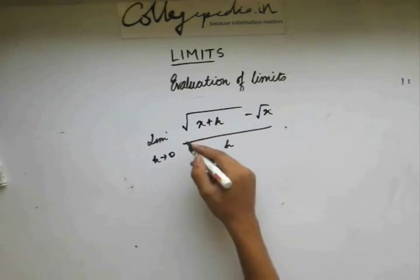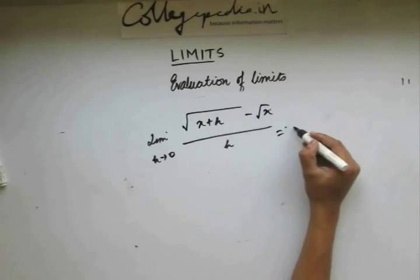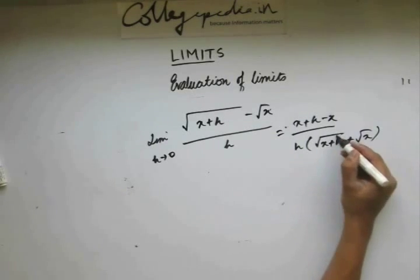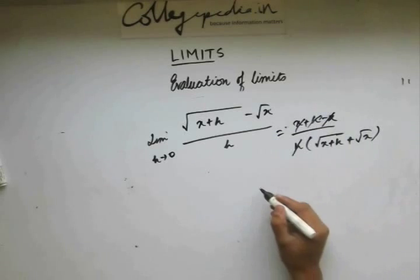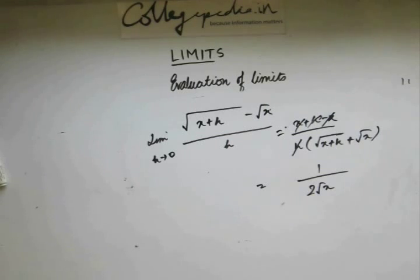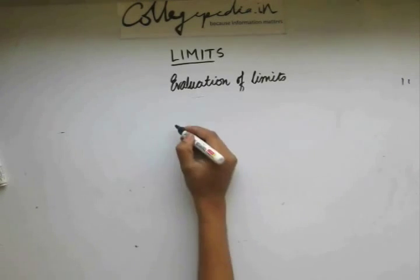Now let's rationalize to get rid of the square root in the numerator. Multiplying by (√(x + h) + √x) on numerator and denominator, the numerator becomes (x + h − x) = h, and the denominator becomes h(√(x + h) + √x). Cancelling h and putting h = 0 gives 1/(2√x), confirming the result. This is how we rationalize expressions to find limits.